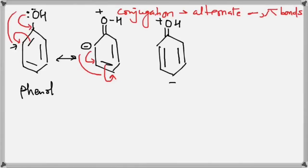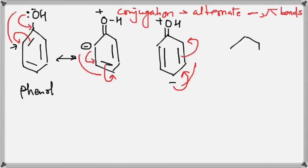Once again we have a negative charge next to a double bond, so the shifting will take place. The negative charge will come here to form a bond, the bond will break to shift the negative charge, and we have our next resonance structure — a double bond here, a double bond formed here, a negative charge on this carbon, and a double bond to oxygen with H and plus charge on oxygen.